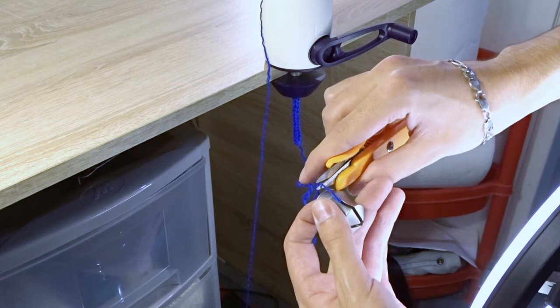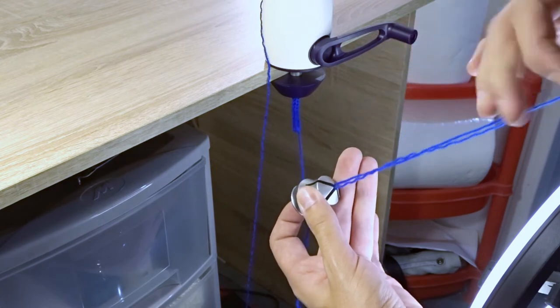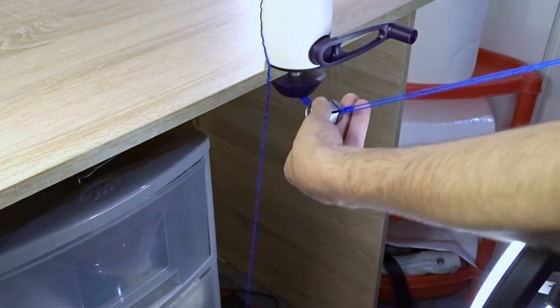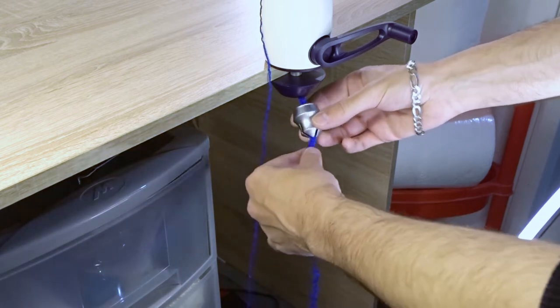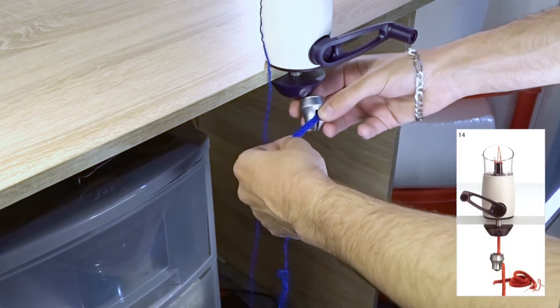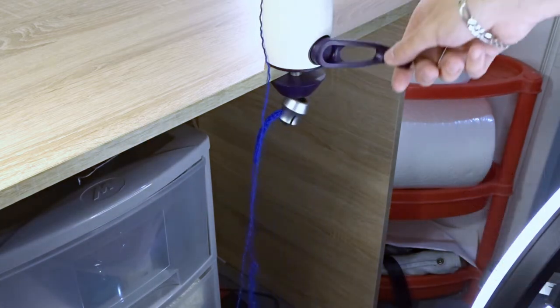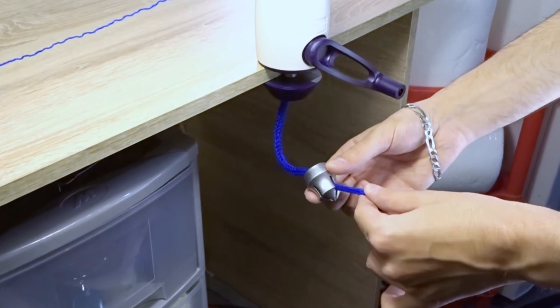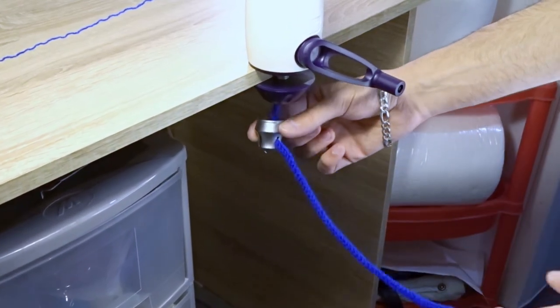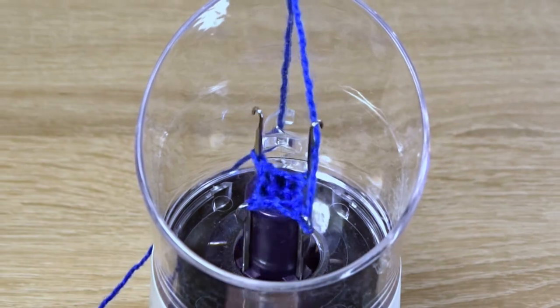Cut the yarn near the knot and pull the end through the center of the weight. Insert the cord into one of the side slots and continue knitting. I can watch this all day.